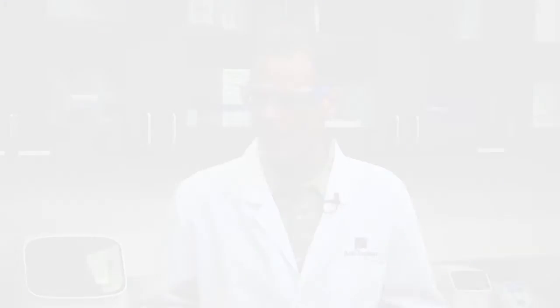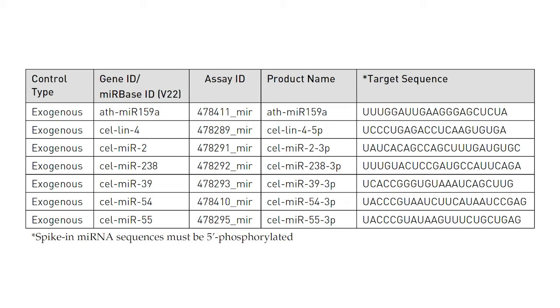In addition, synthetic microRNA molecules can be used as spike-in controls and are extremely useful as exogenous controls in difficult samples such as serum and plasma. Spike-ins, or exogenous controls, are synthetic RNA molecules added to the sample. A spike-in control should be a target sequence not present in your sample — for example, ATH-MIR-159A is not present in humans, so it is a good exogenous control for humans.